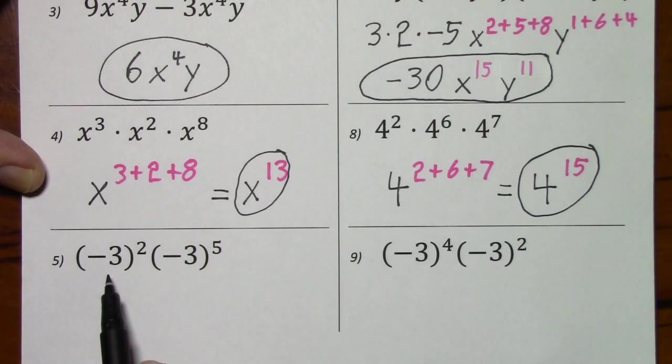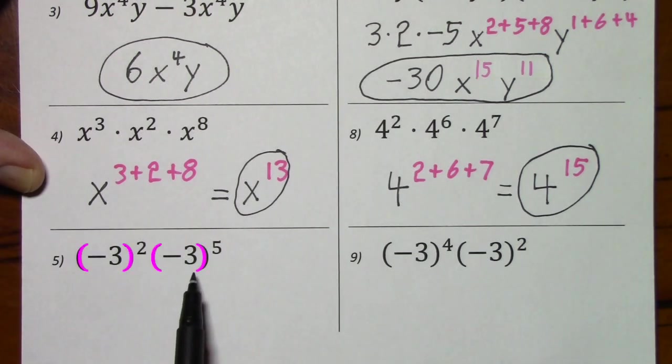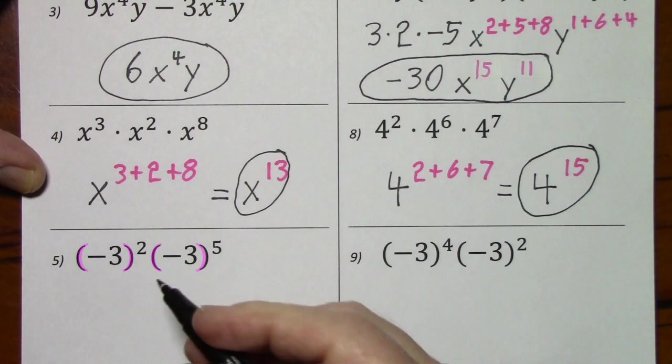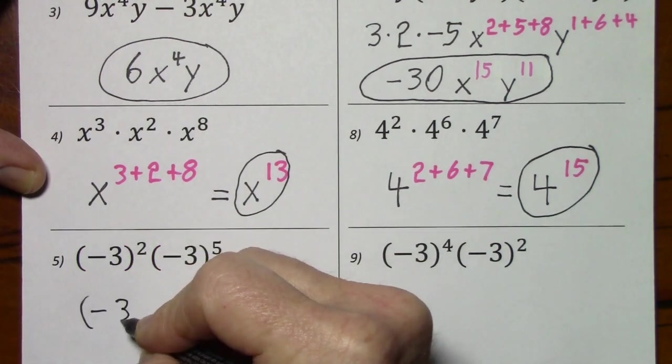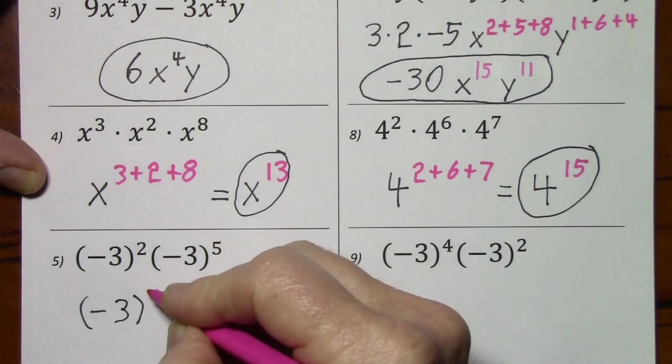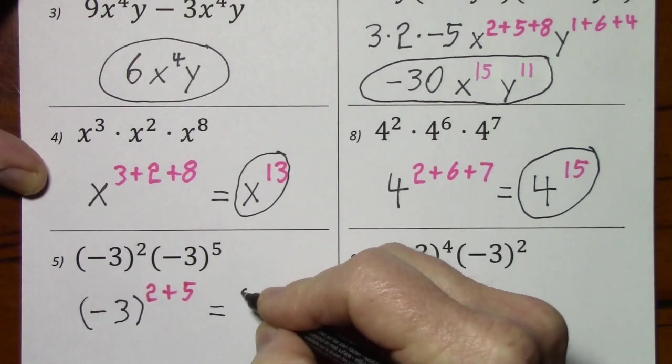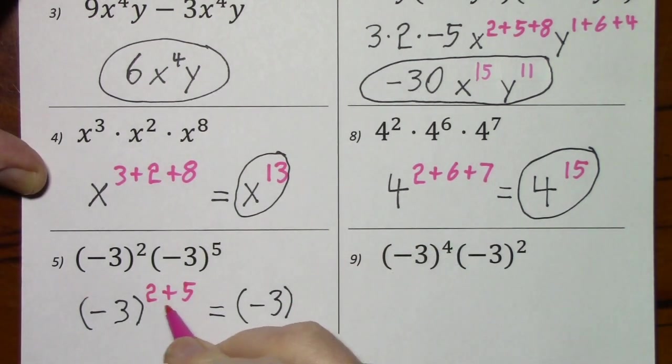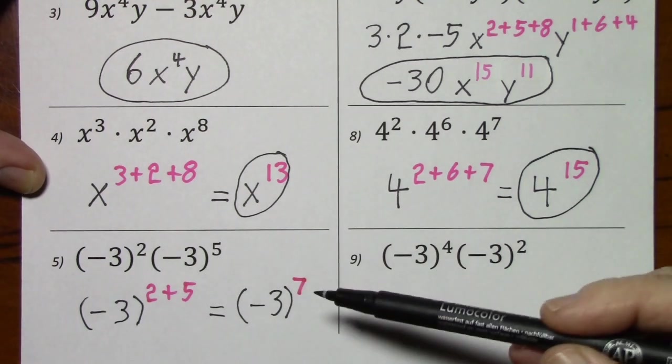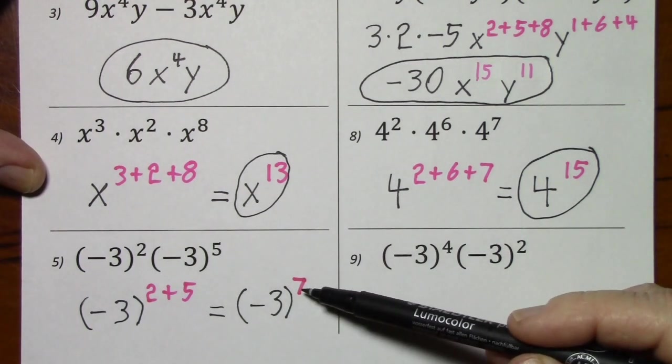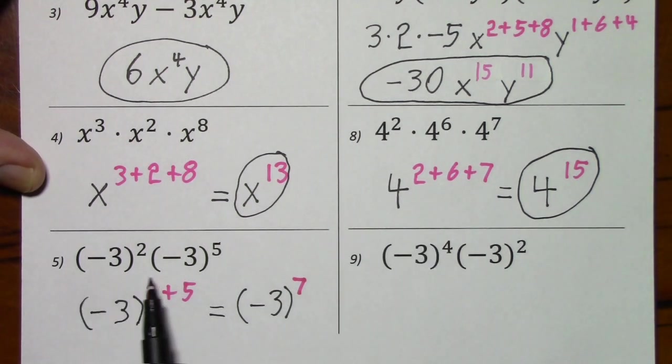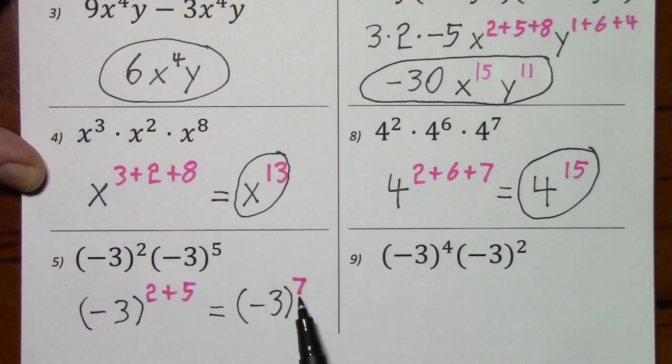Looking at number 5, the bases are the same and we're multiplying, so we just add exponents. So that's negative 3 to the 2 plus 5, which is negative 3 to the 7th. Now, negative 3 to the 7th is a large number. Most likely, if you're given this problem, you'll just be asked to write the answer in exponential notation, which is a fancy way of saying we want to see an exponent. You don't have to calculate out this value.